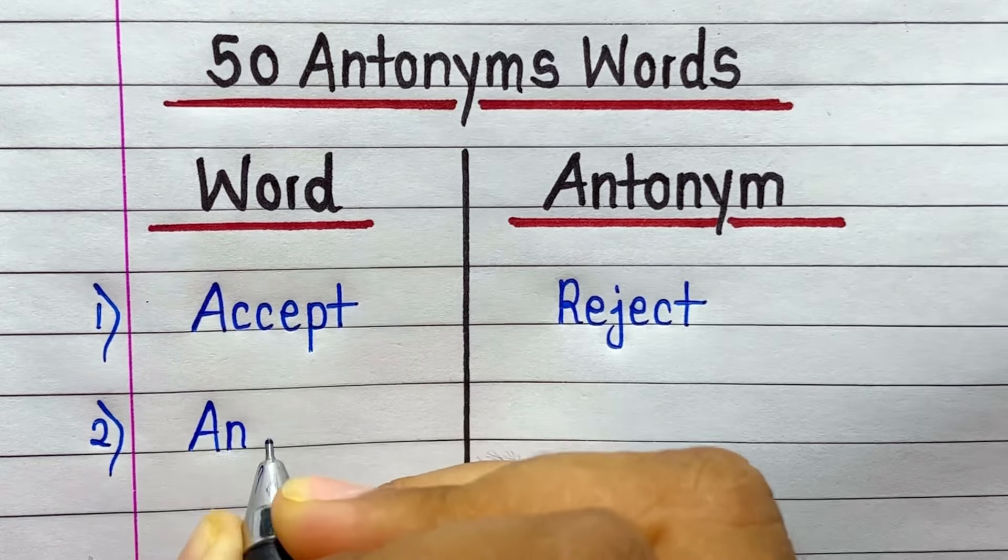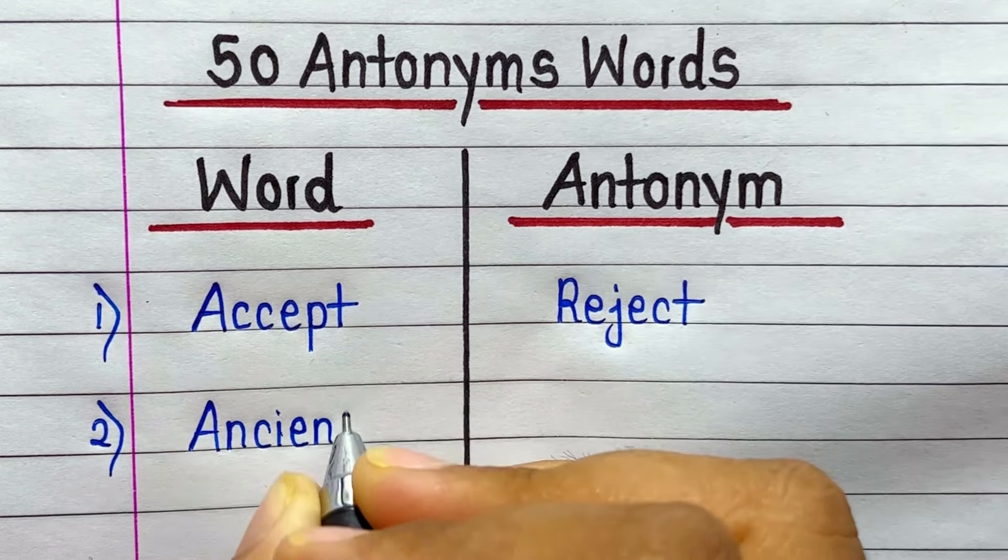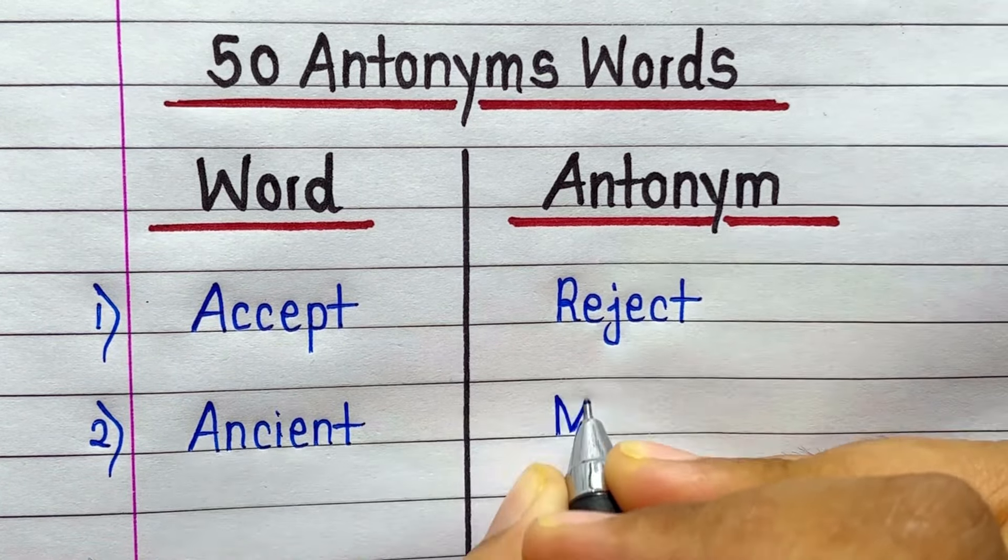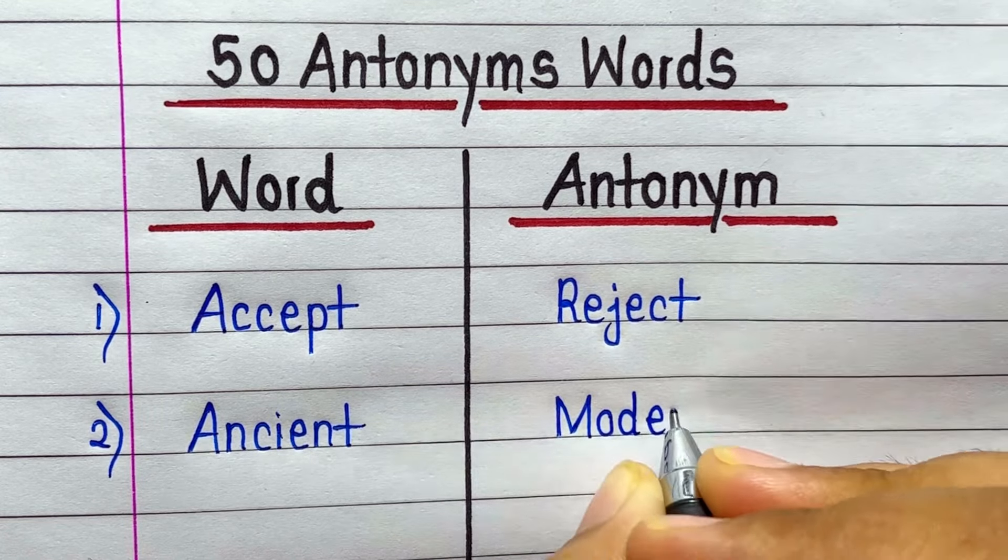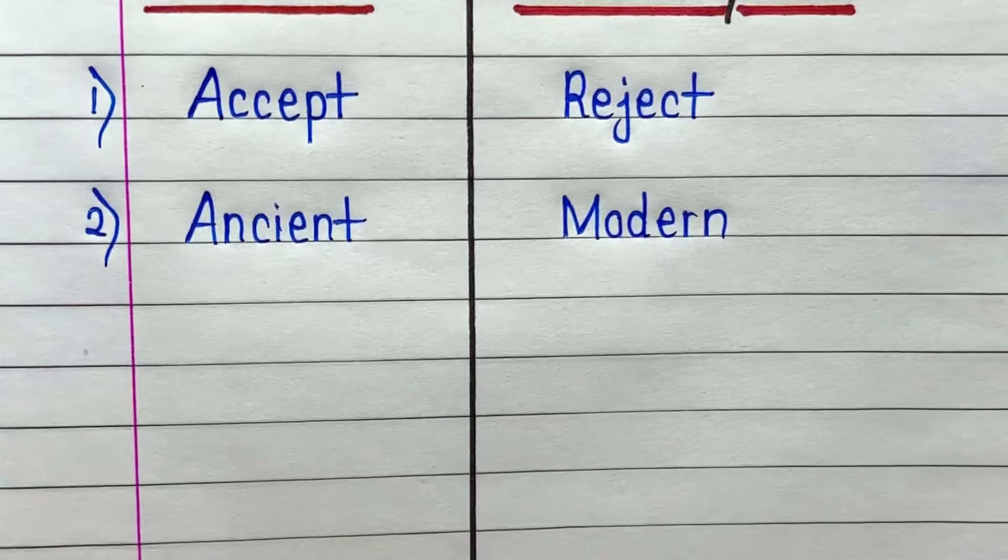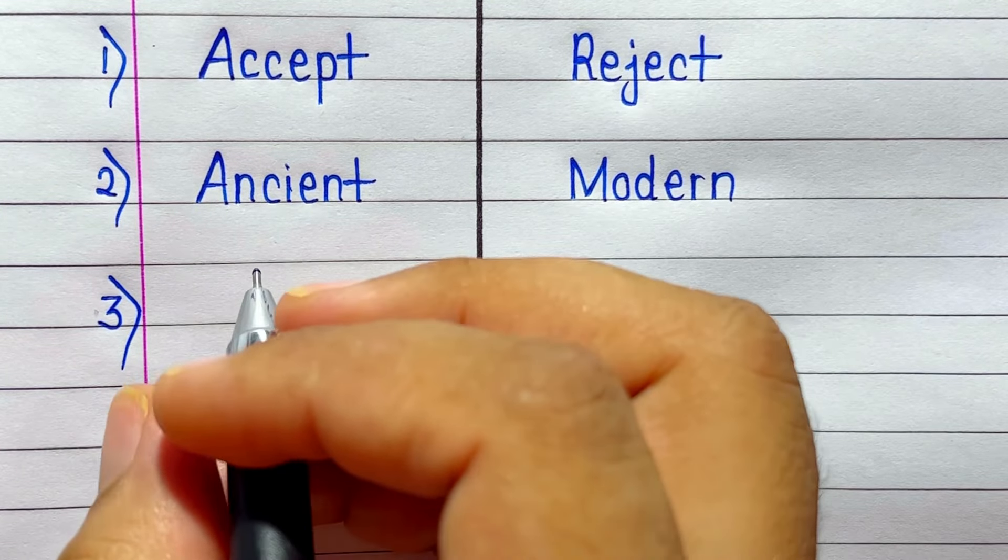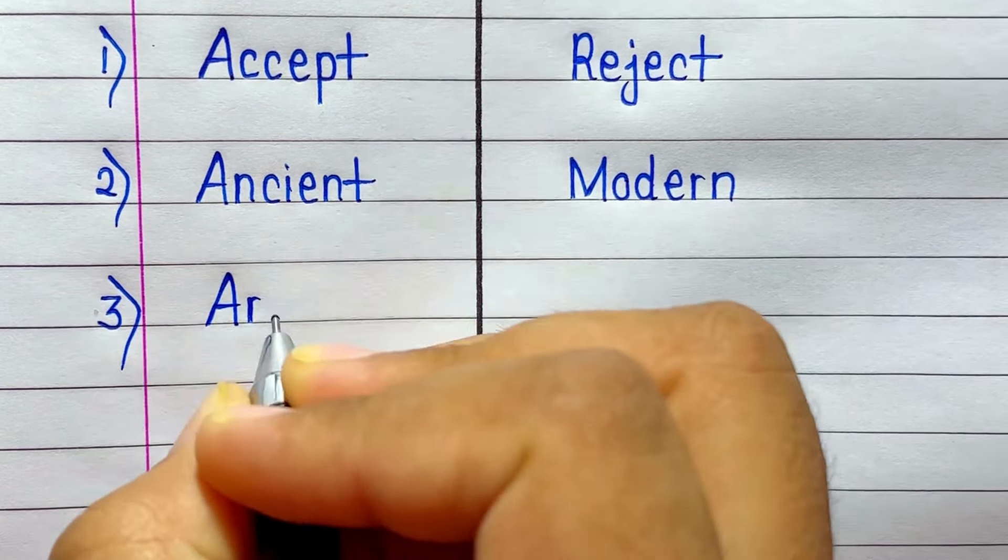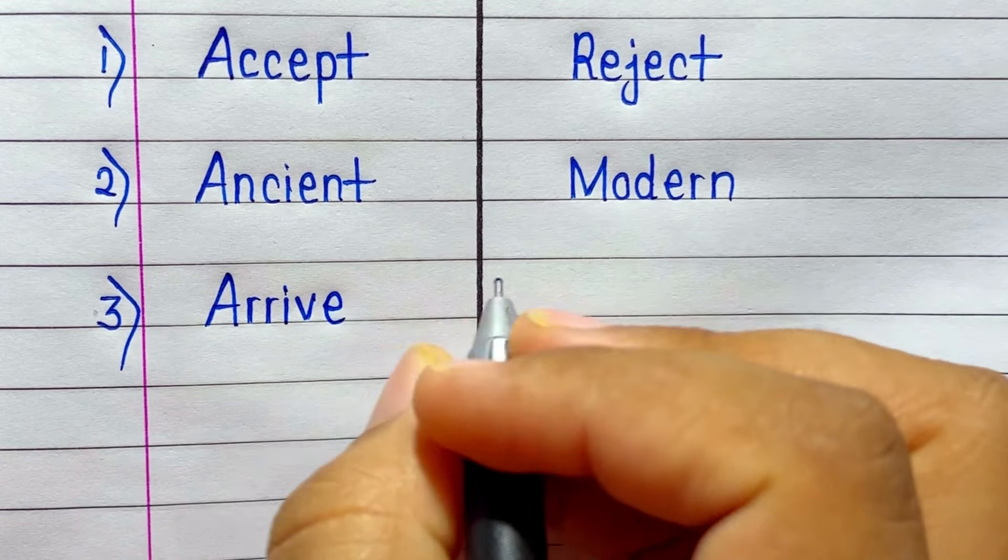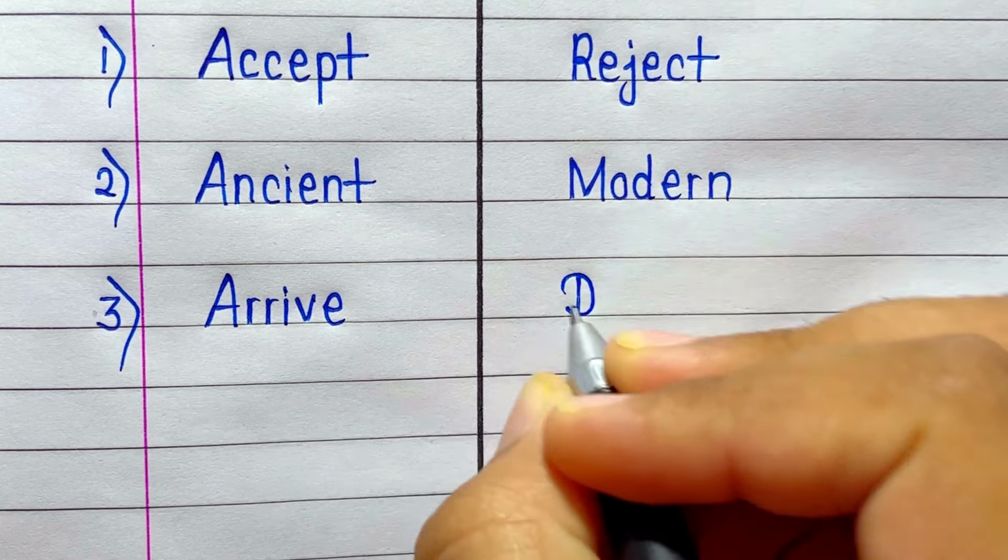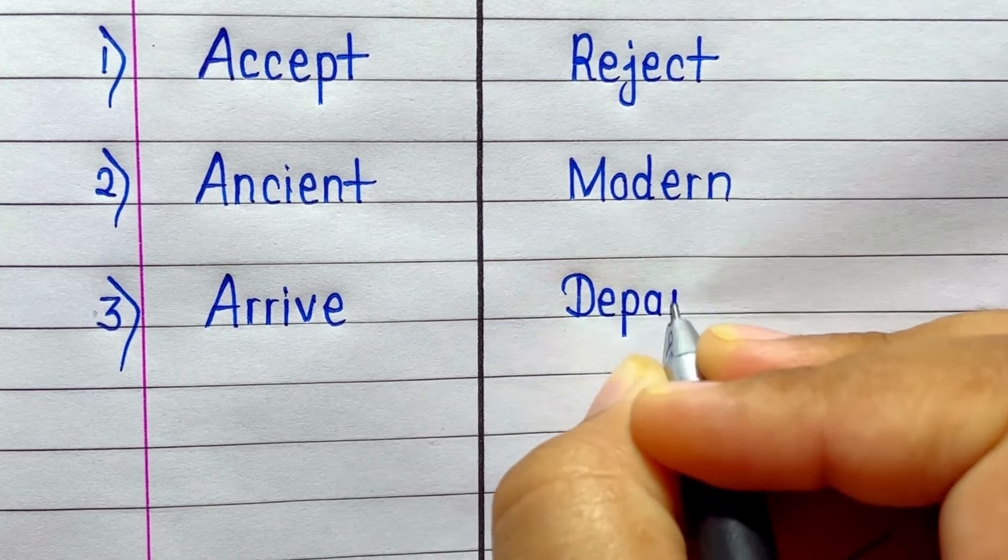Number 1 is Accept. Antonym of Accept is Reject. Number 2 is Ancient. Antonym of Ancient is Modern. Arrive. Depart.